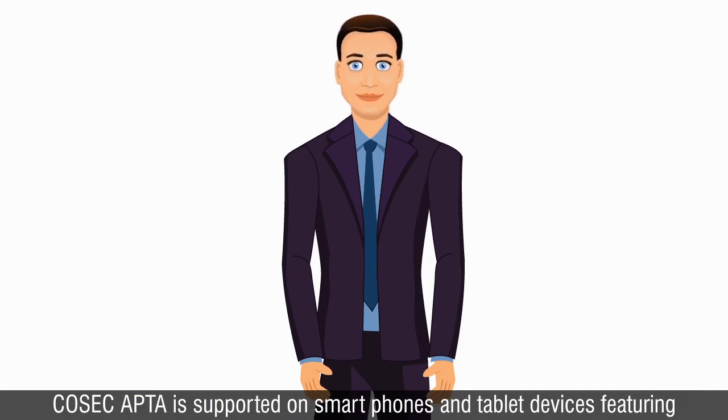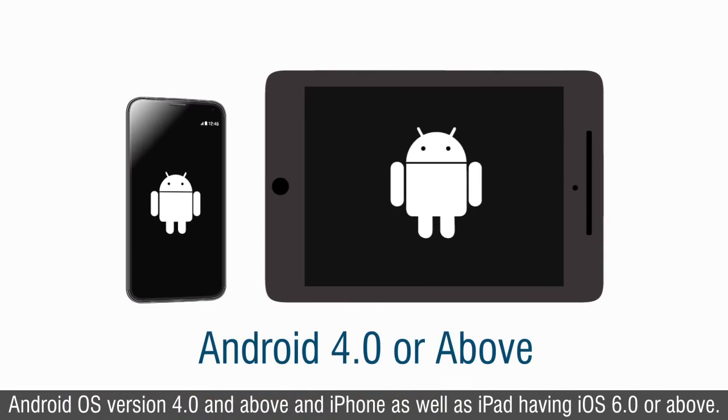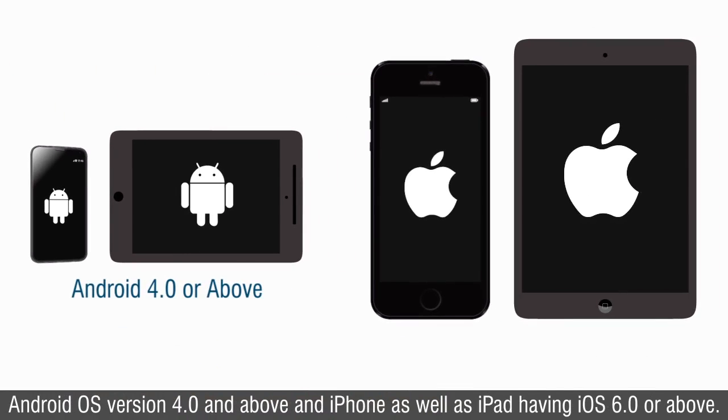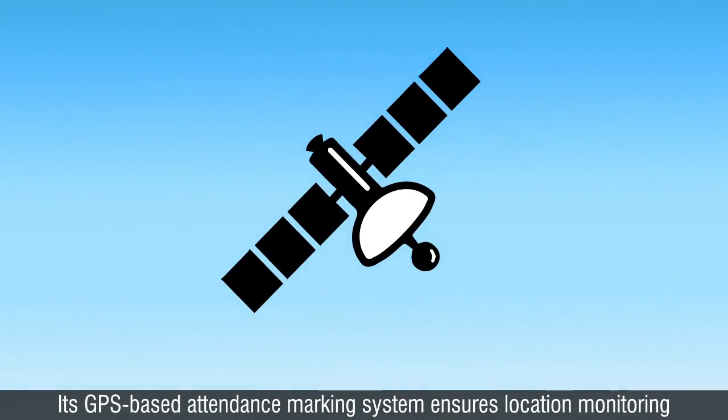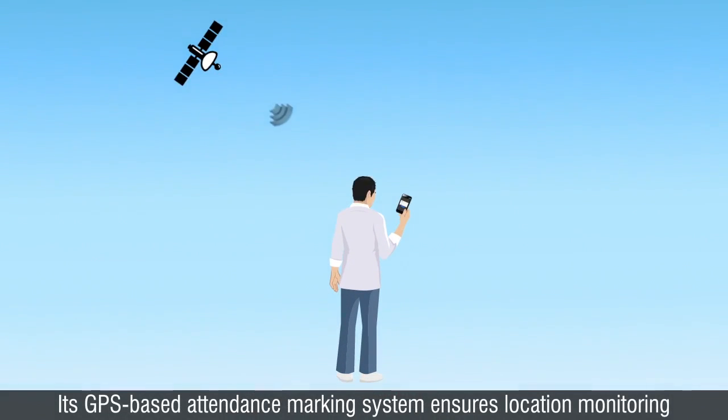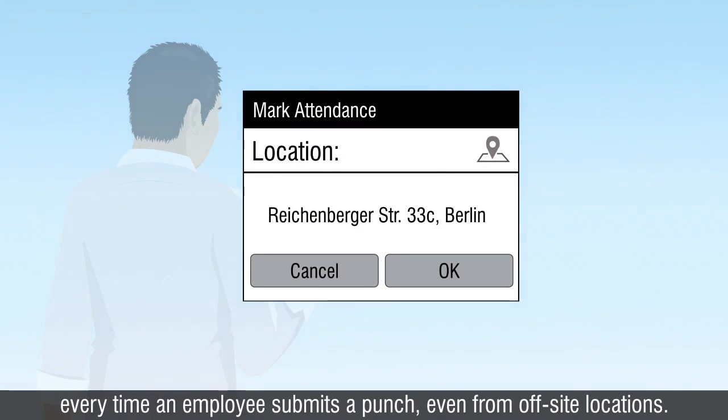Cosec Apta is supported on smartphones and tablet devices featuring Android OS version 4.0 and above, and iPhone, as well as iPad, having iOS 6.0 or above. Its GPS-based attendance marking system ensures location monitoring every time an employee submits a punch, even from off-site locations.